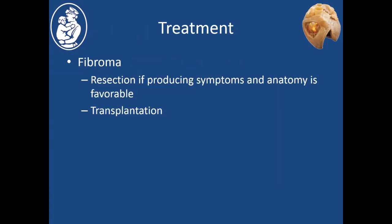Treatment for fibromas is generally resection if they're producing symptoms and the anatomy is favorable. We have generally taken the view that most of these tumors need to be resected because of the risk of sudden unexpected death. However, if the tumor is extremely large and involves vital structures like the mitral valve or papillary muscles, transplantation is another potential option for patients having arrhythmias.